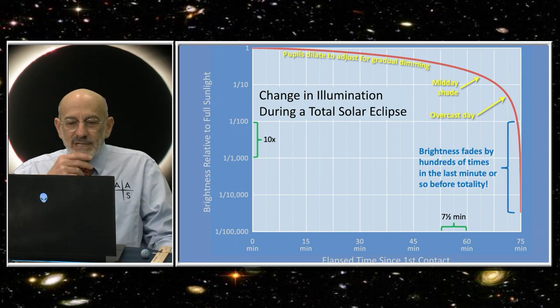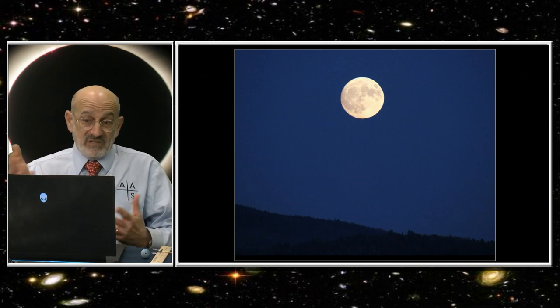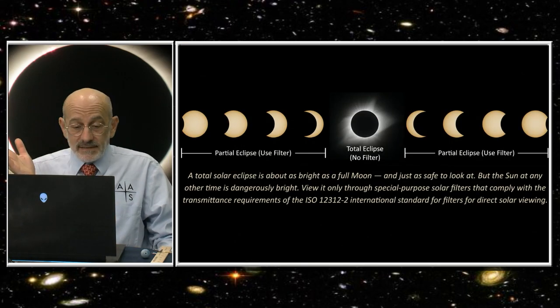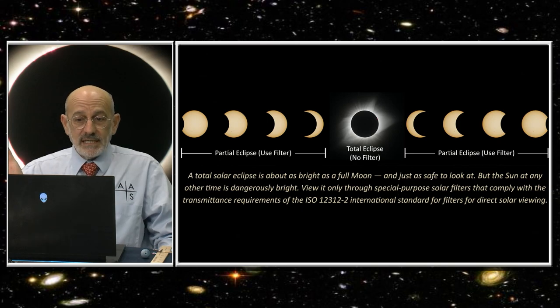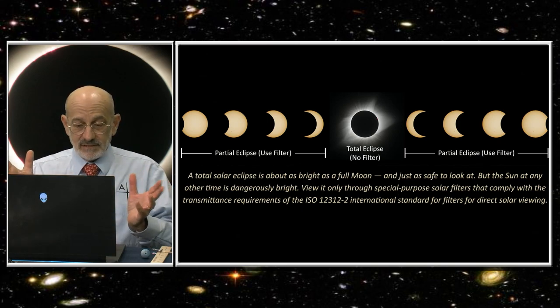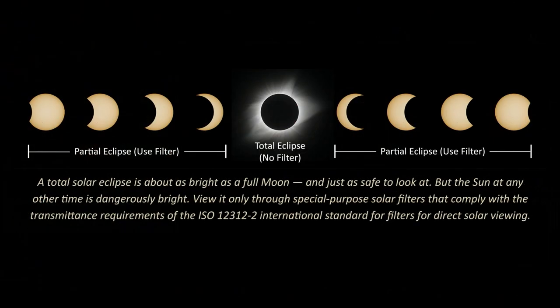Let's talk real quickly about safety. The next slide shows the full moon. Why do I show the full moon? Because the totally eclipsed sun is only about as bright as the full moon, which means it's perfectly safe to look at. It's perfectly safe to look at the totally eclipsed sun without any eye protection.